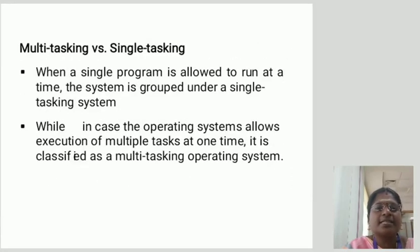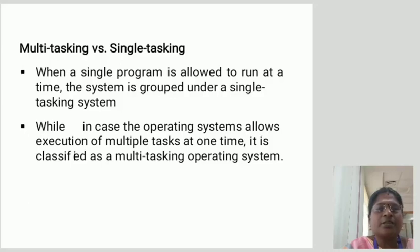Multitasking vs. Single-tasking: When only a single program is allowed to run at a time, that is called a single-tasking system. When the OS allows the execution of multiple tasks at one time, it is called a multitasking operating system. For example, when we are working on a computer, taking a printout, and also listening to music — many processes are executed at the same time.